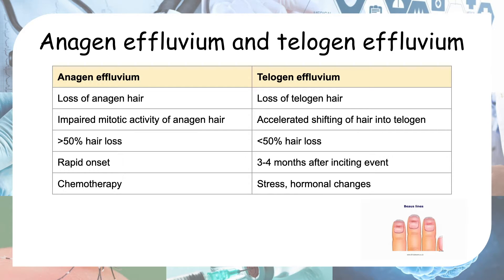Telogen effluvium is due to the accelerated shifting of hair into the telogen phase, usually due to stress or hormonal changes. In anagen effluvium there is usually more than 50% hair loss, whereas in telogen effluvium it rarely affects more than 50% of the scalp. Anagen effluvium has rapid onset after the chemotherapy cycle, whereas telogen effluvium occurs about three to four months after the inciting stress or hormonal change. In both, you can see Beau's lines — transverse ridges on the nails.